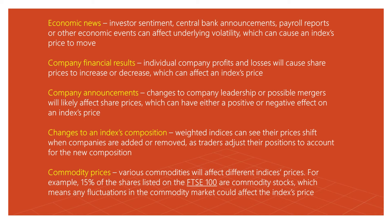You should also monitor changes in index composition, because weighted indices can see their prices shift when companies are added or removed as traders adjust their positions. Additionally, watch commodity prices — there is a connection between stocks, indices, and commodity prices. For example, around 20% of the FTSE 100 share list is commodity stocks, meaning fluctuations in the commodity market can affect the index price. This is especially important in 2021 with huge inflation and a very volatile commodity market.